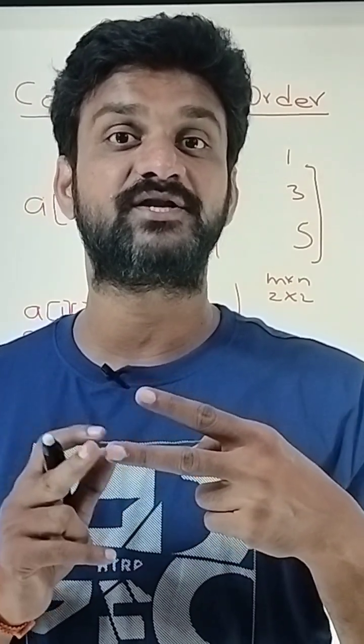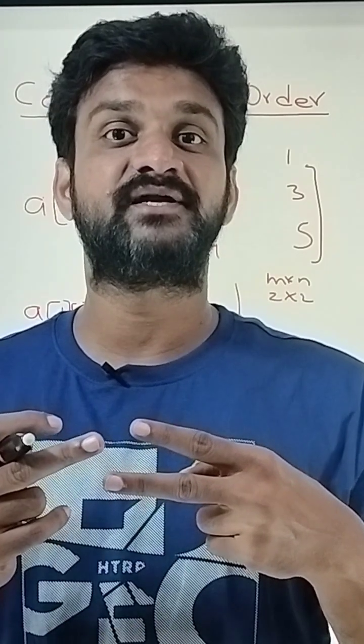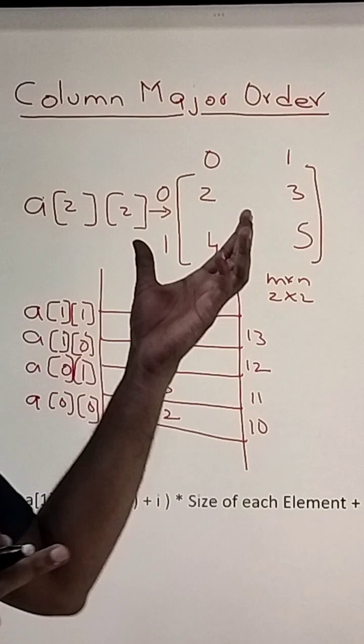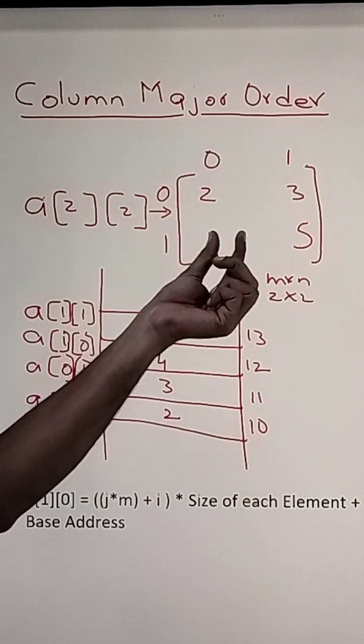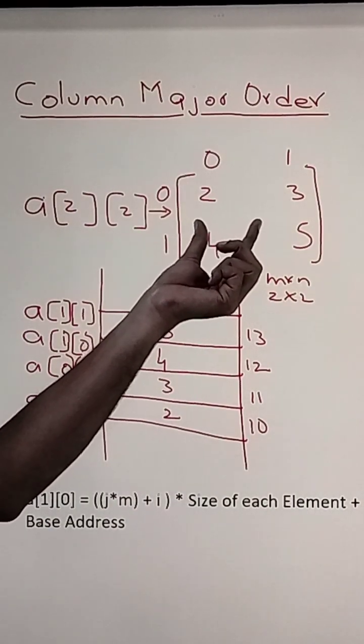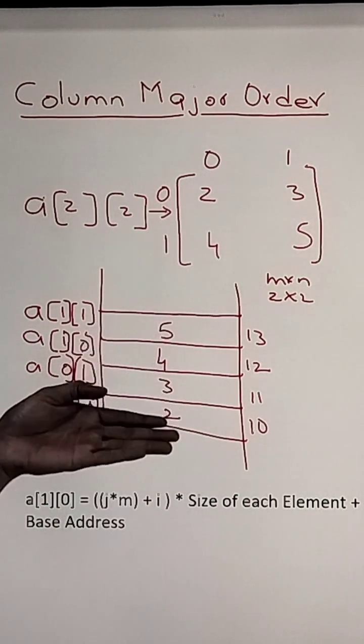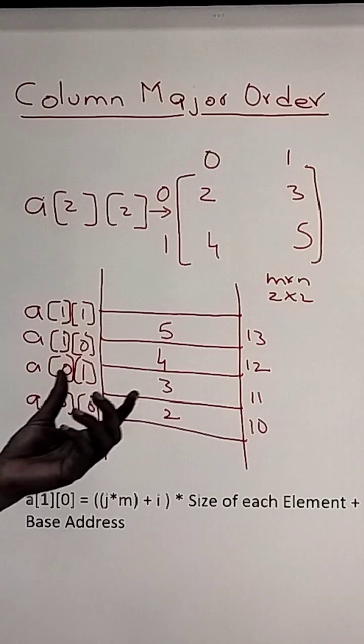The compiler uses any one of these methods. In this class we'll try to understand column major order. This is our two-dimensional array, this is our visualization of a two-dimensional array, but the elements will get stored in this way in the memory.